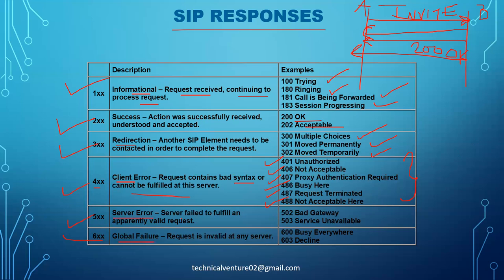5xx indicates a server error — the server failed to fulfill an apparently valid request. Examples include 502 Bad Gateway and 503 Service Unavailable. 6xx indicates global failure — nothing will work. Examples include 600 Busy Everywhere and 603 Decline.